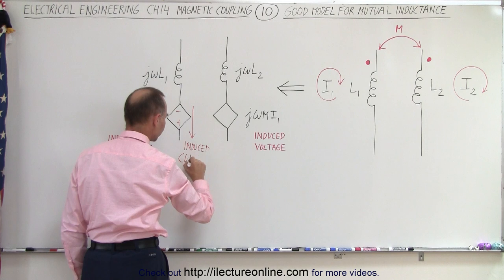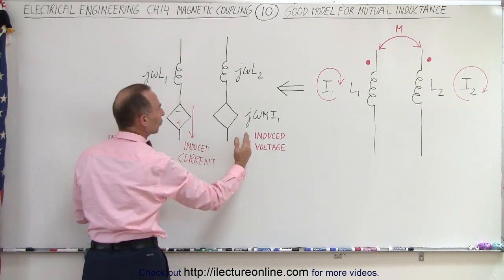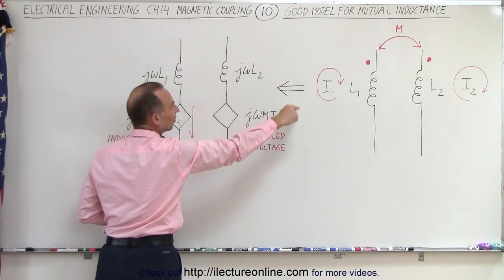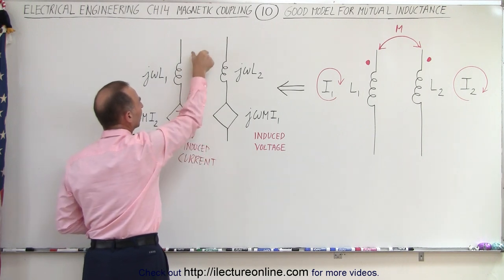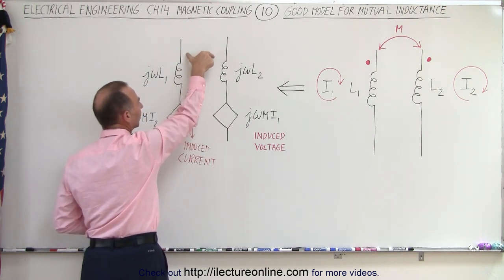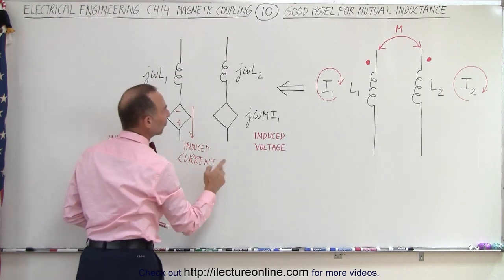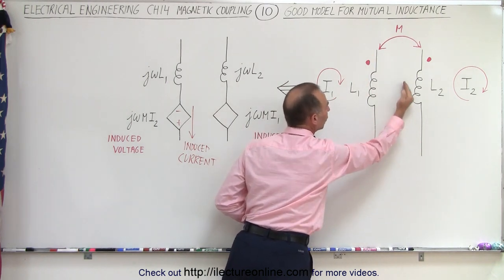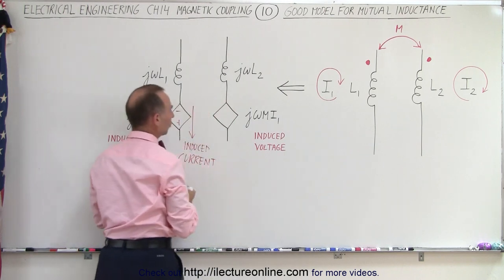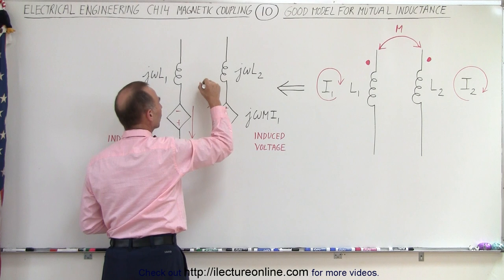The induced current will therefore be in this direction. The reason we have the current going in this direction in this circuit is that we have a current induced in the opposite direction in the other circuit if the coupling is such that we have the same polarity on both sides of the inductor. Notice that we have the current going downward in circuit 1, which means we get an induced voltage in the opposite direction in circuit 2, which means we have the plus here and the minus there, and an induced current in this direction in that circuit.